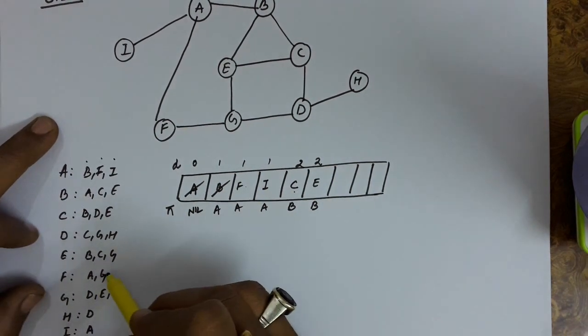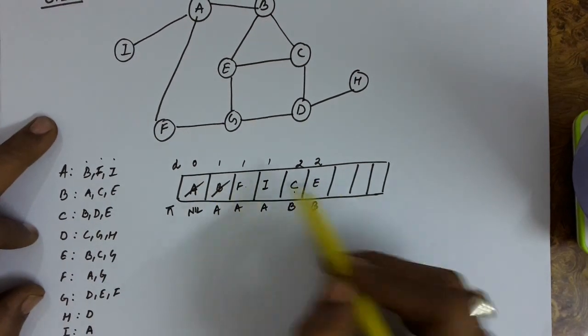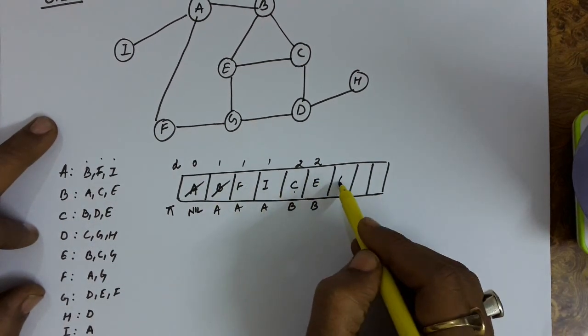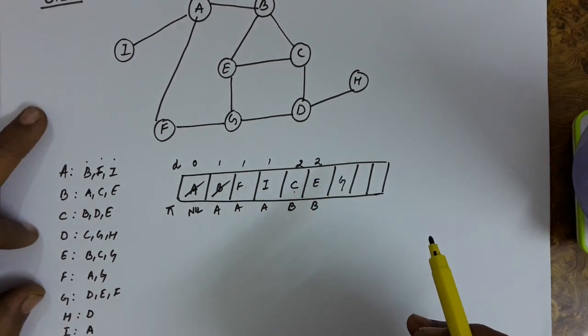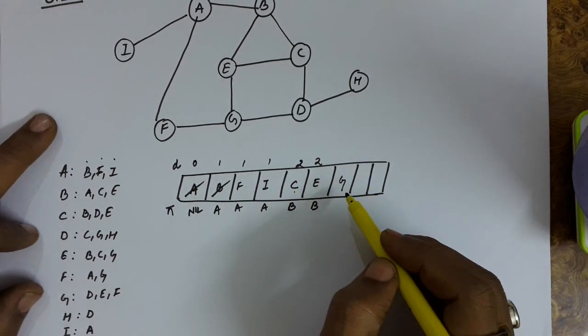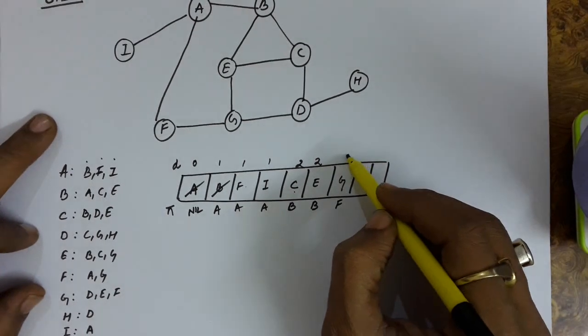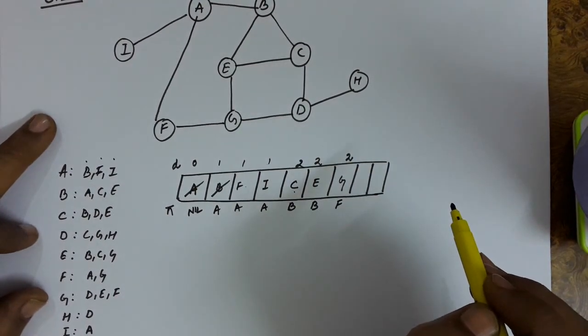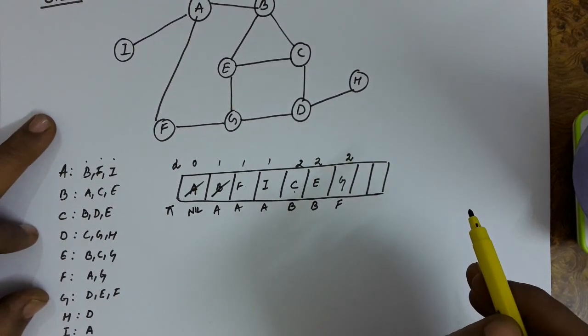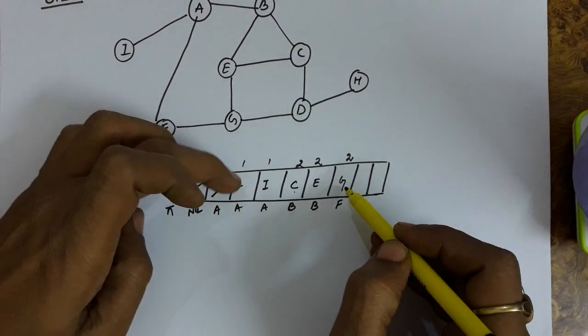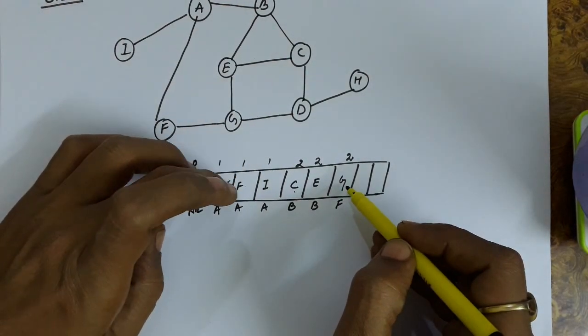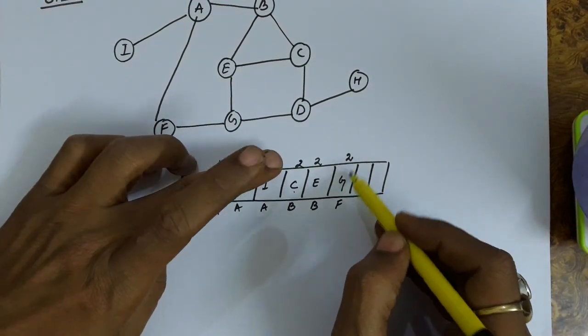The connections from F are A and G. A has got deleted. G is not there in the queue. So there is a possibility of insertion of G in the queue. Set predecessor of G as F and two as the distance of G. One more than the distance of F. F has a distance one so the distance of G will be two.